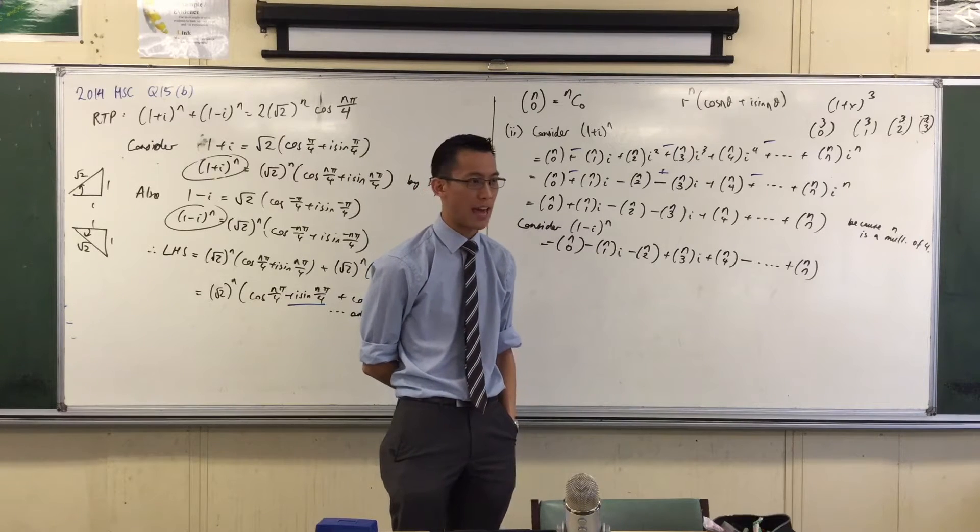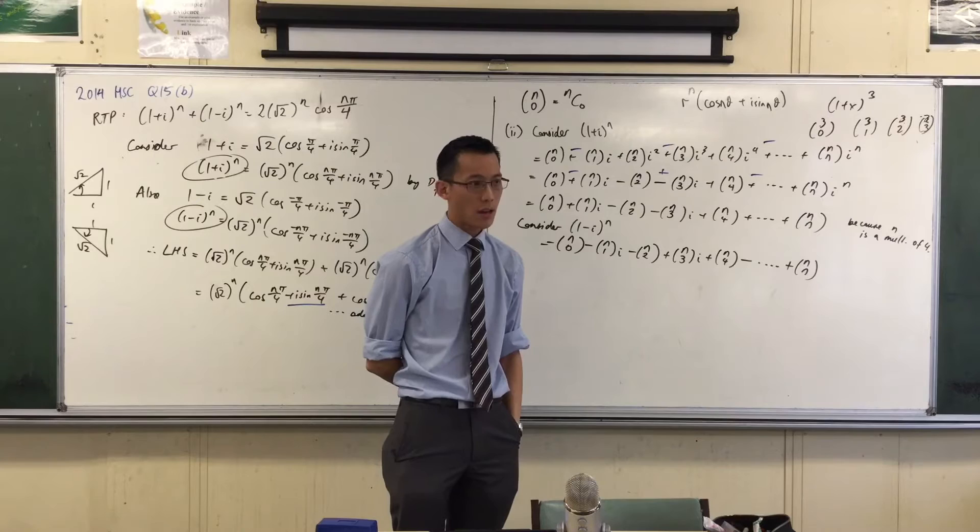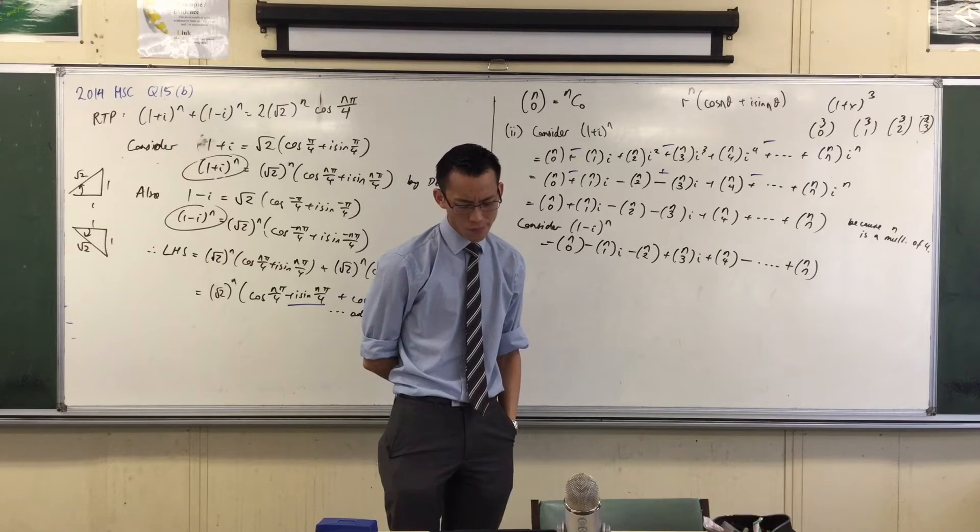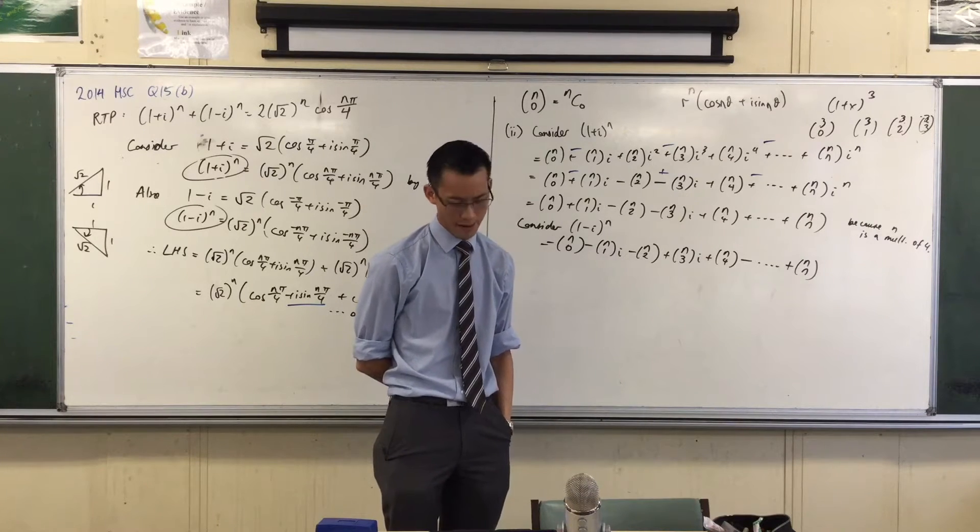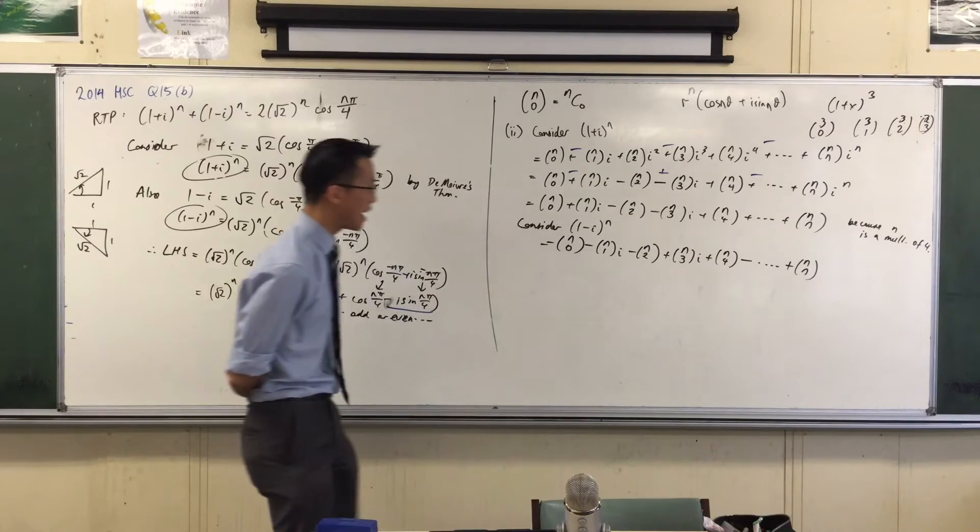There's something that we've got that's missing there. What's missing? Look at the numbers on the bottoms of the n-whatevers. Yeah, all of the odd numbers are gone. Did you notice that? The 1, 3, 5, 7, etc. Why are they gone?